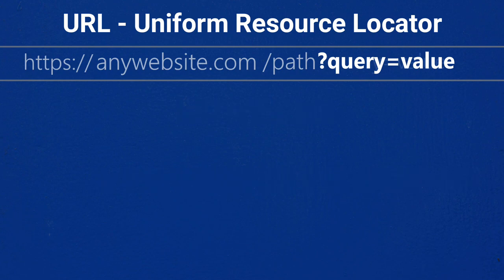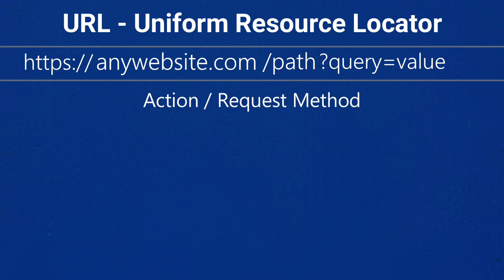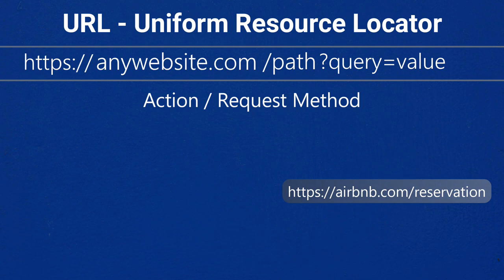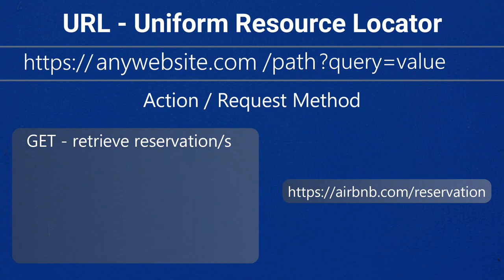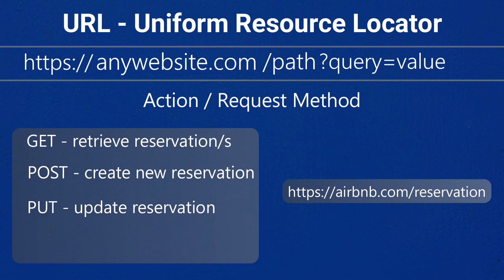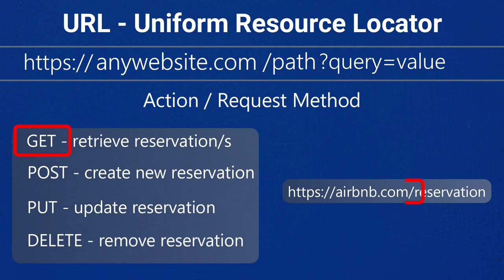A URL alone is not enough for the server to understand what the user wants, so an action — also known as a request method — is passed along with the URL. There are four most known request methods. In our Airbnb example: we can retrieve a reservation with GET, create a new reservation with POST, update a reservation with PUT, and remove a reservation with DELETE. By combining the action and the path, the server can find the correct function that needs to be run.